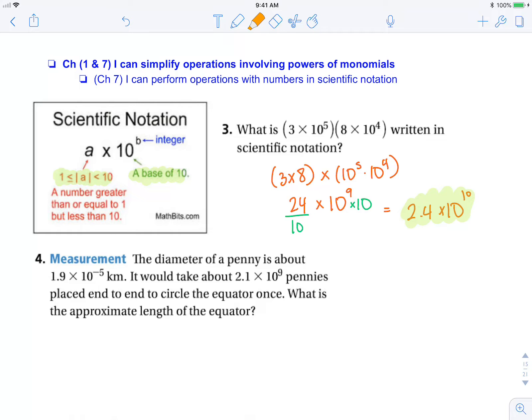Well, if we can line up this many pennies to go around the length of the equator, then we know the equator is approximately 2.1 times 10 to the 9th multiplied by the diameter of the pennies. So that equals 2.1 times 1.9 multiplied by 10 to the 9th times 10 to the negative 5th kilometers.